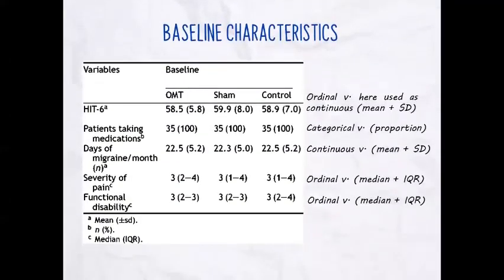Here we have the baseline characteristics of the outcome variables. The first one is our primary outcome, the HIT-6. They decided to use it as a continuous variable — we see they use mean and standard deviation — but actually, the HIT-6 looks more like an ordinal variable rather than a continuous one. The other outcomes are patients taking medications, which is categorical, so they use proportion; days of migraine per month, which is continuous, so mean and standard deviation; and the last two, severity of pain and functional disability, are both ordinal, and they described them with median and interquartile range.